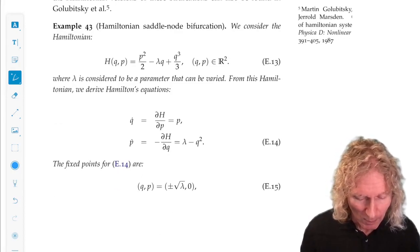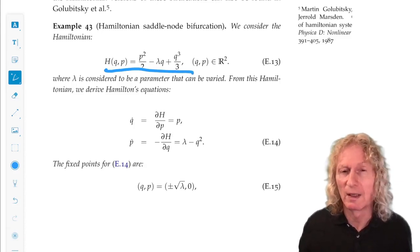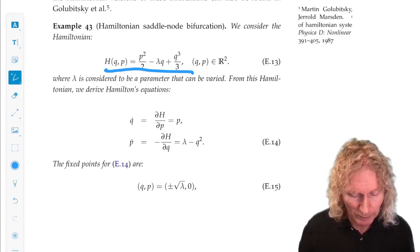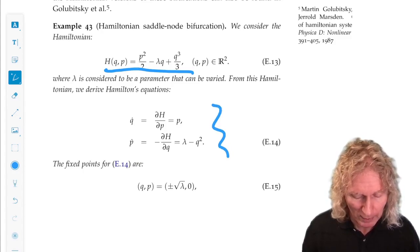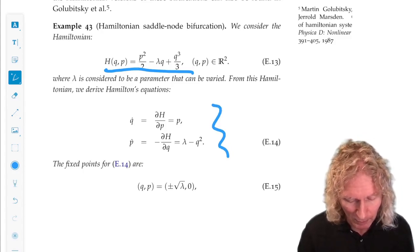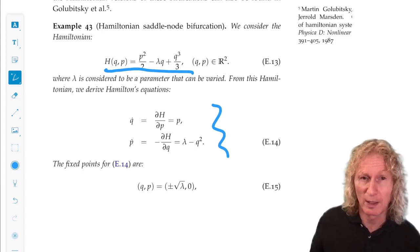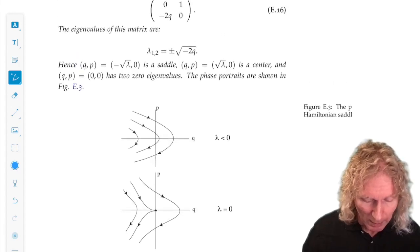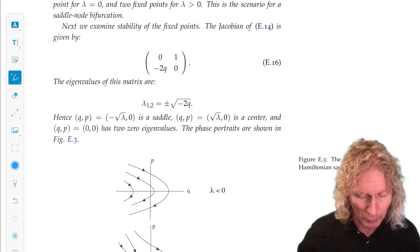So this is the model for the Hamiltonian saddle node. Model in the sense that I gave you models earlier and we went from that point. So write down the Hamiltonian vector field, we can find the fixed points. We see that there are two fixed points for lambda positive, no fixed points for lambda negative, and one for lambda equals zero. Sounds like a saddle node, but now we're in the Hamiltonian setting.